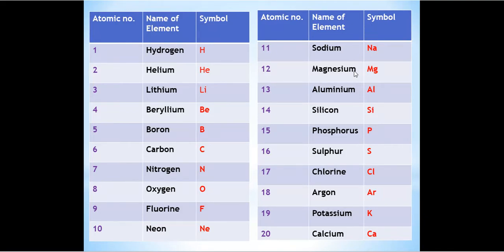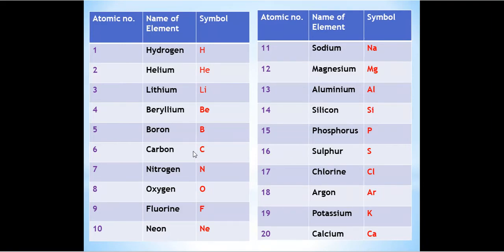Neon is Ne, sodium is Na, magnesium is Mg, aluminium is Al, silicon is Si, phosphorus is P, sulfur is S, chlorine is Cl, argon is Ar, potassium is K, and calcium is Ca. Since we can't give helium the symbol H — that belongs to hydrogen — helium is given He. Similarly, carbon is C and calcium is Ca, to distinguish between the two elements starting with the letter C.